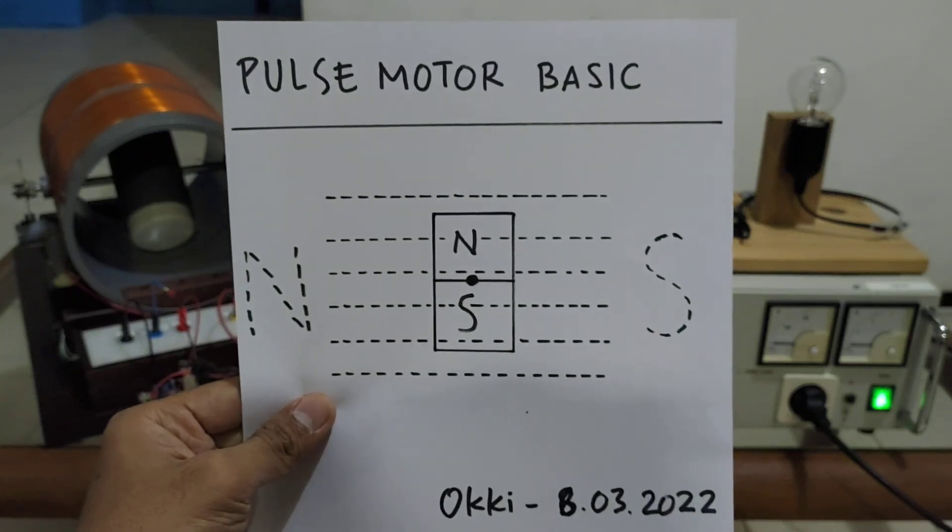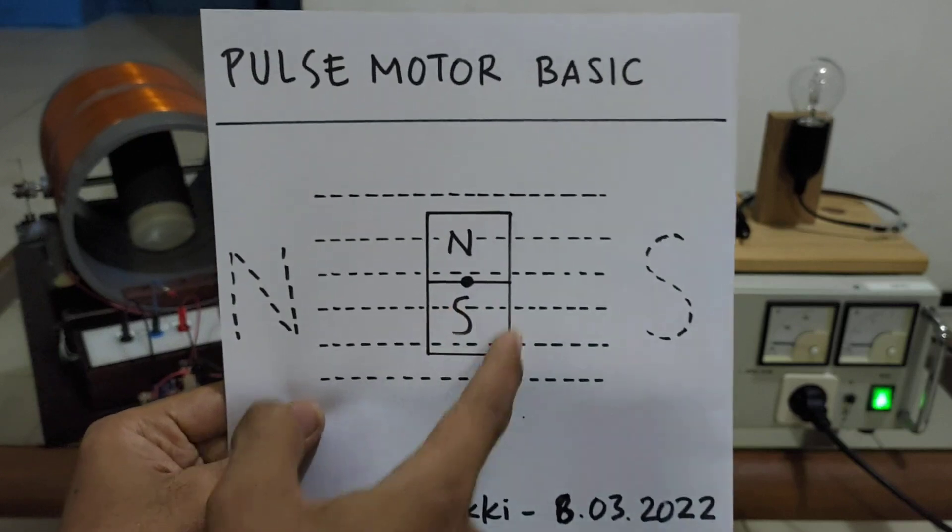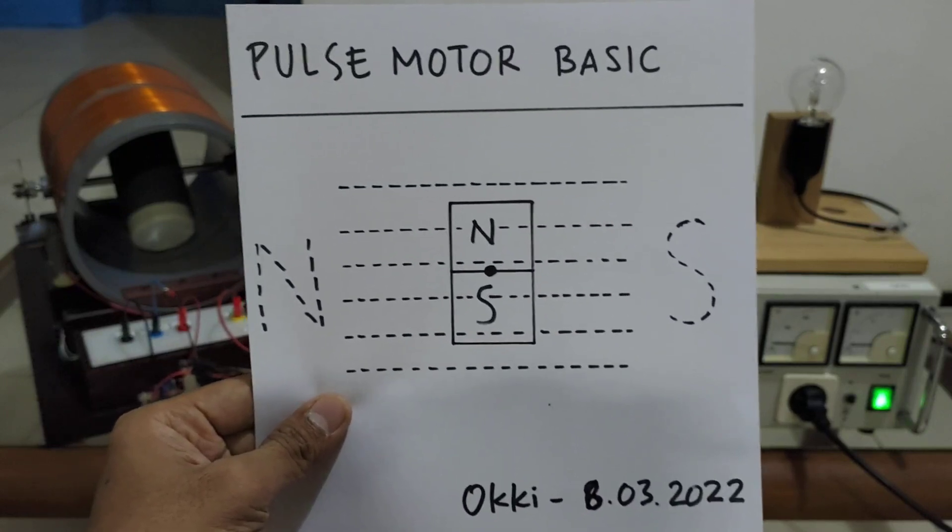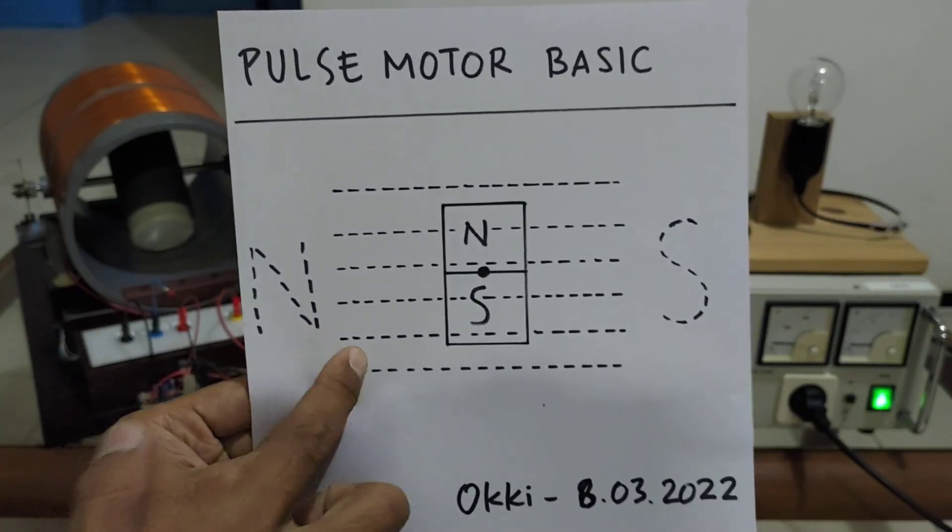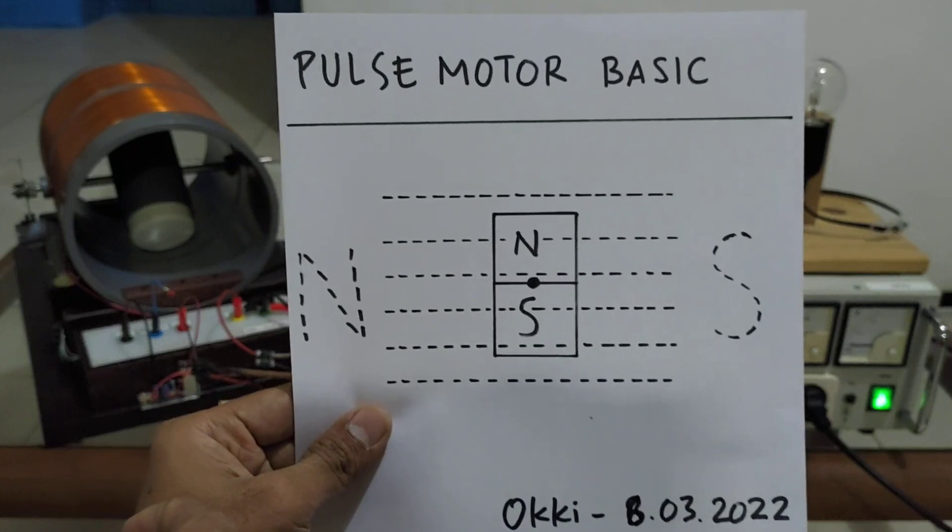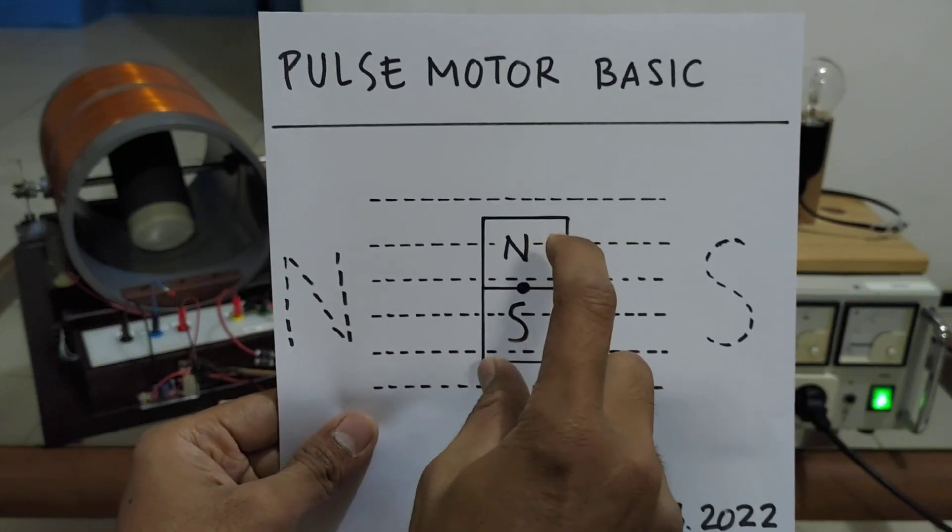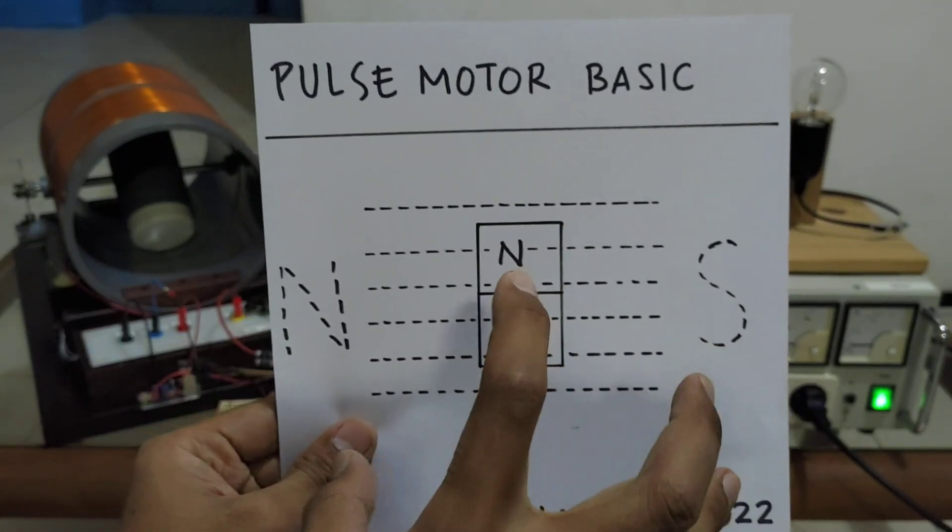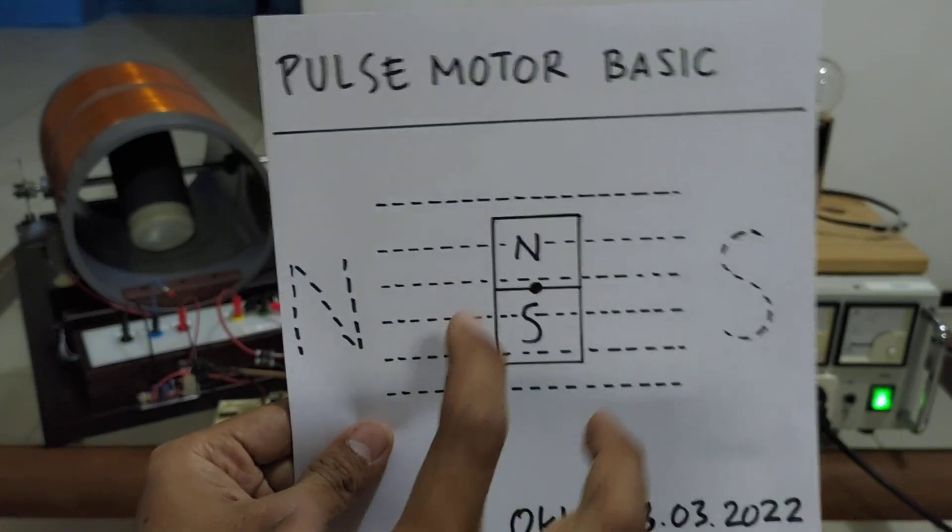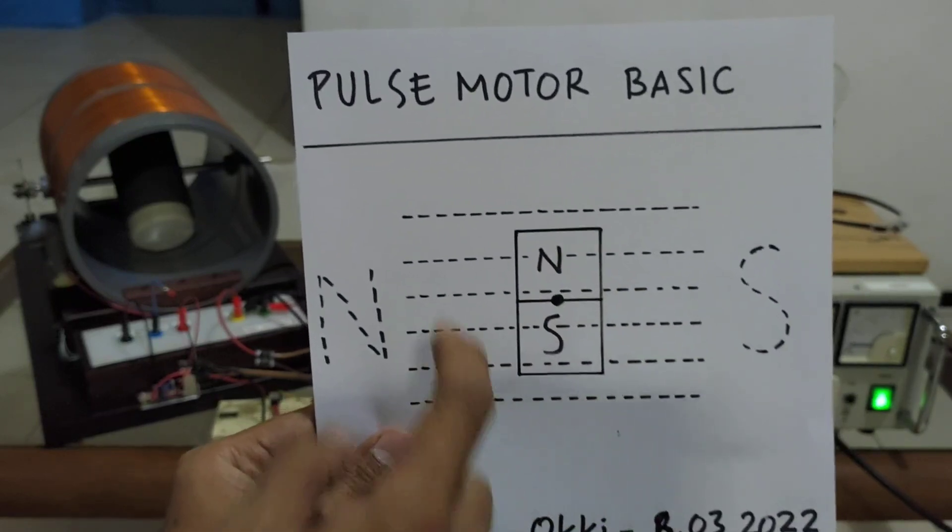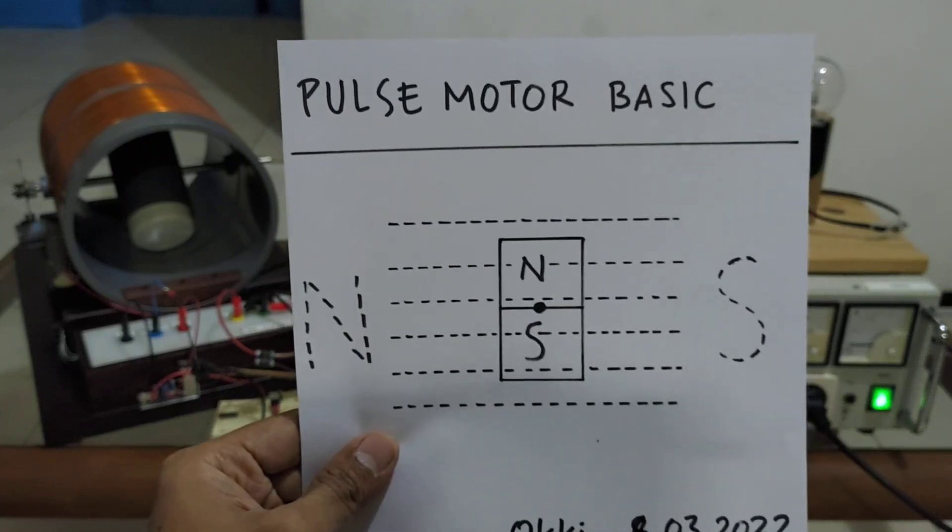Now, about the basics of pulse motor. Here is the rotor, permanent magnet rotor, and if we have magnetic field in this orientation, the rotor will turn clockwise. And if we pulse the magnetic field at the correct timing, the rotor will continue to rotate.